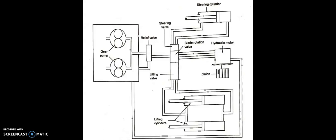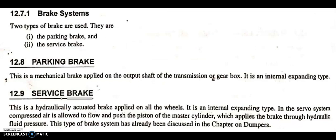Two types of brakes are used. Number one is parking brake—this is a mechanical brake applied on the output shaft of the transmission or gearbox. It is an internal expanding type. Number two is service brake—this is a hydraulically actuated brake applied on all the wheels. It is an internal expanding type. In the servo system, compressed air is allowed to flow and push the piston of the master cylinder, which applies the brake through hydraulic fluid pressure.